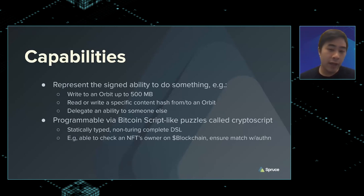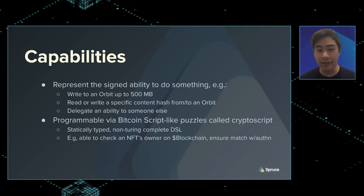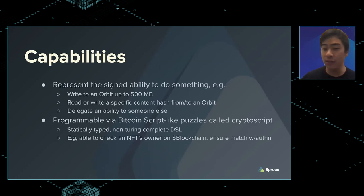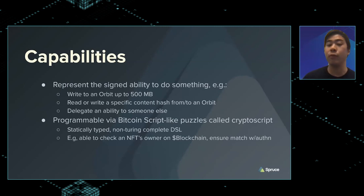So we have something called CryptoScript that we're working on — a statically typed, non-Turing-complete DSL. We prefer non-Turing-completeness when describing things for security and simplicity, taking inspiration from Bitcoin script and other reduced languages. The use case: checking an NFT's owner on the blockchain, making sure it matches the person authenticating the request, and only letting the NFT owner download the content for that NFT — that's the kind of permissioning expression we want.